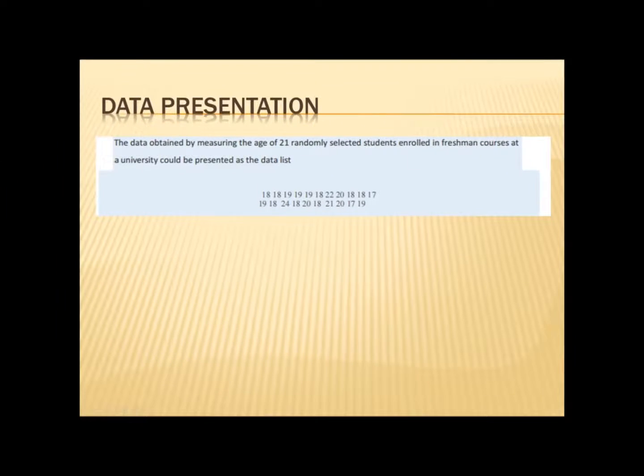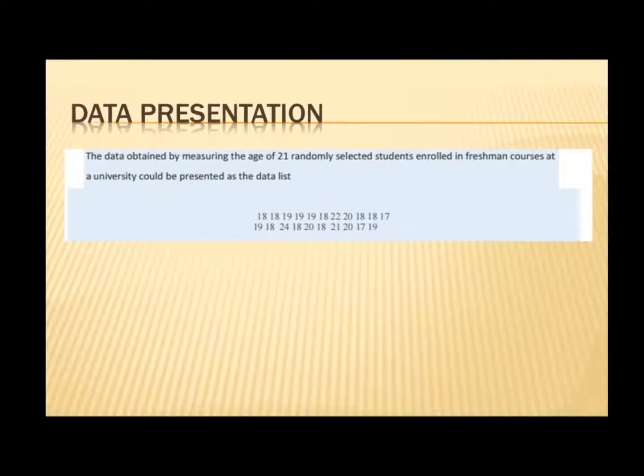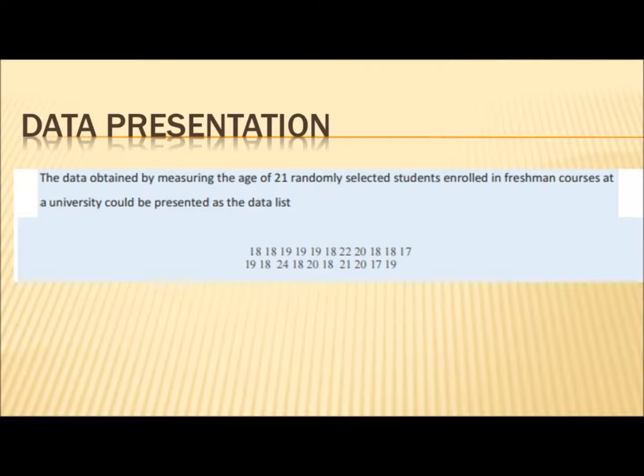Now let's start looking at some samples of what people do in terms of statistics. This is not biostatistics, this is merely statistics. For data presentation, the data obtained by measuring, for example, the age of 21 randomly selected students enrolled in freshman courses at a university could be presented as a data list.